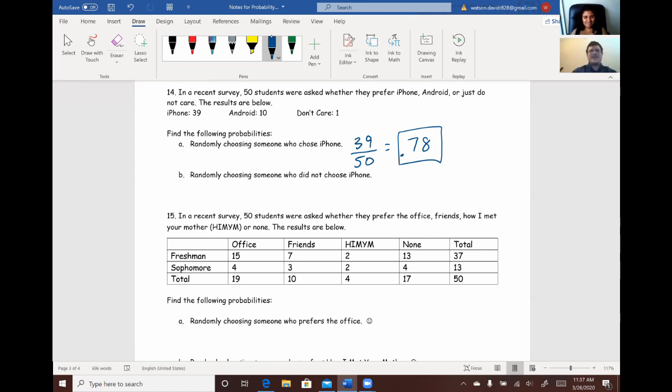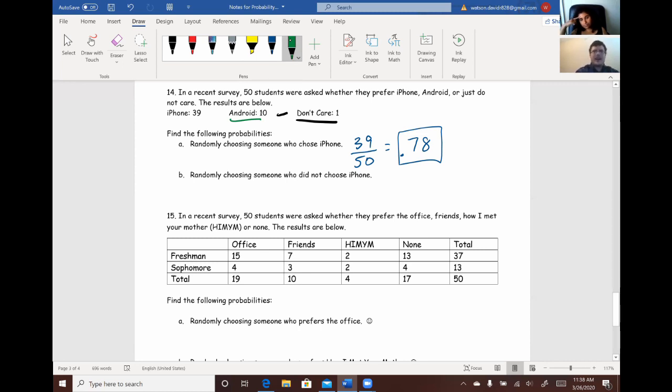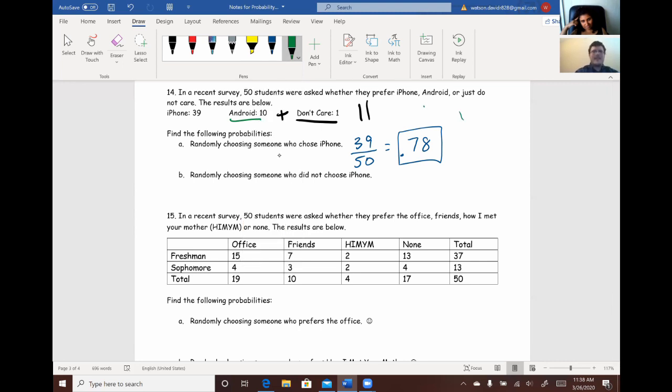So, part B. Randomly choosing someone who did not choose iPhone. So, for this one, if they didn't choose iPhone, that means they either picked Android or they didn't care. One of the two. All right. So, we can just add those up and we get 11. All right. So, there's 11 people who didn't choose iPhone. So, we just take that 11, divide it by the 50. And we'll get 0.22.